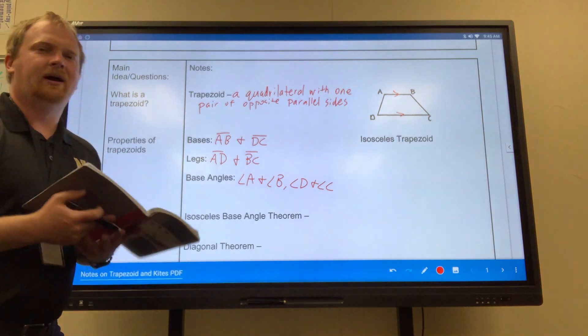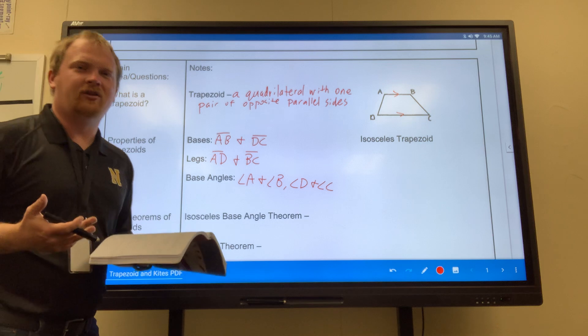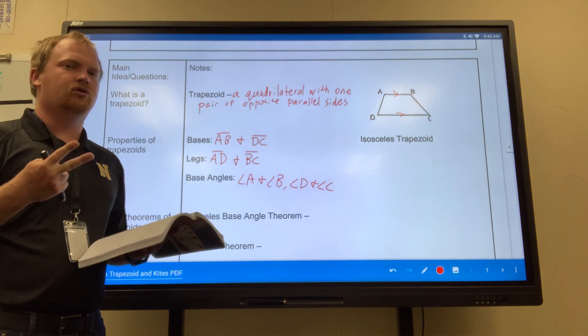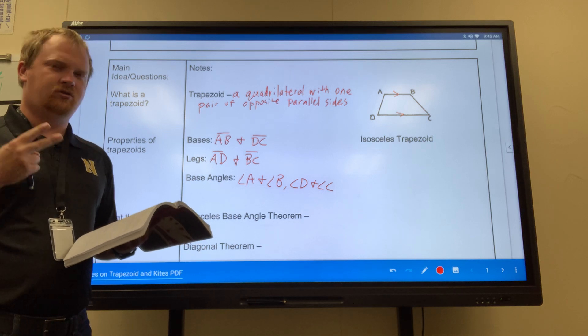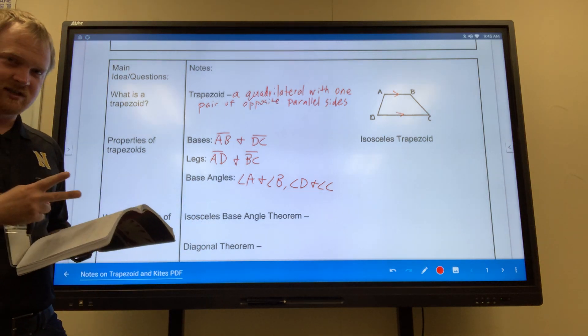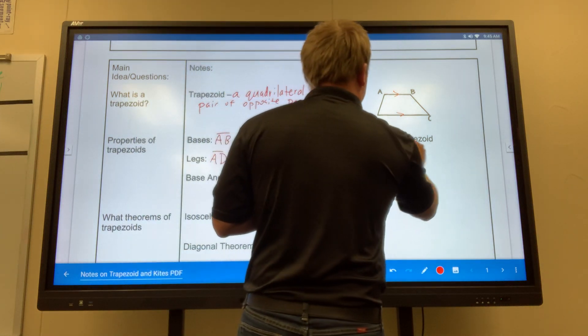Now, what about the isosceles trapezoid? Well, we know what an isosceles is. It basically means two congruent sides, because we know an isosceles triangle has two congruent sides.